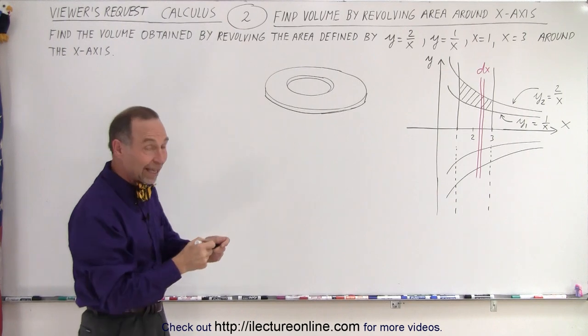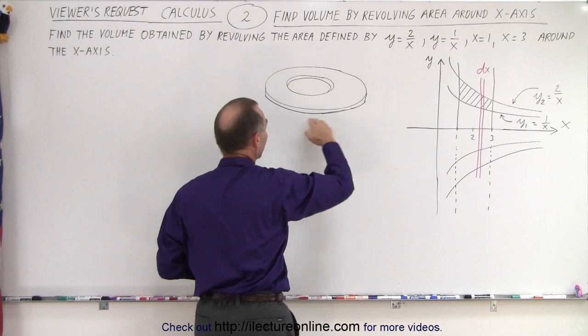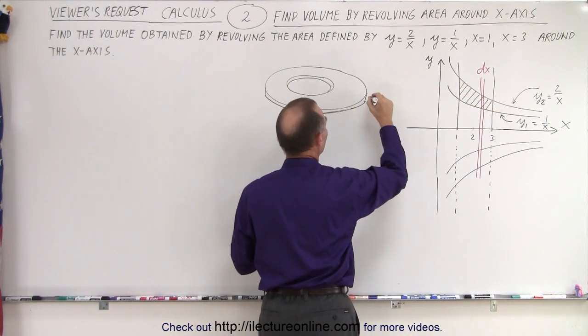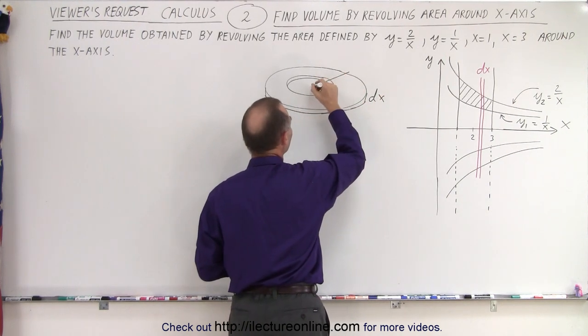So that's the segment you would get. If you take a knife and slice like this, you can notice you have a little washer. This thickness right here is the dx. We have an outer radius and an inner radius.